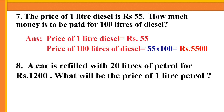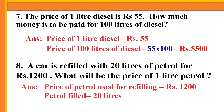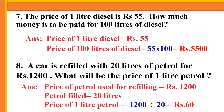A car is refilled with 20 liters of petrol for 1,200 rupees. What will be the price of 1 liter of petrol? Price of petrol used for refilling = 1,200 rupees. Petrol filled = 20 liters. To find the price of 1 liter, you have to divide: 1,200 divided by 20 = 60 rupees.